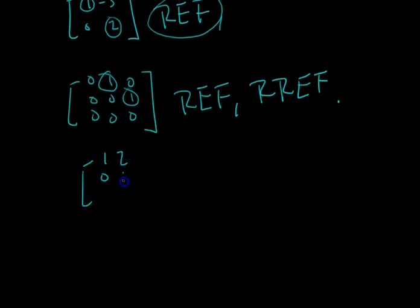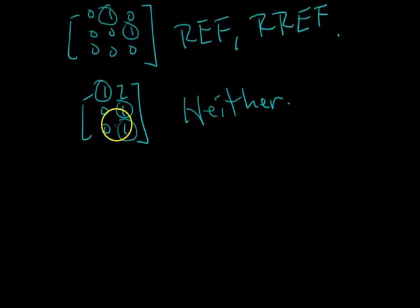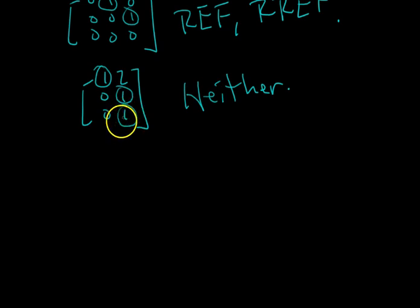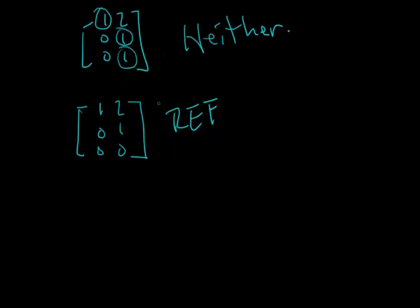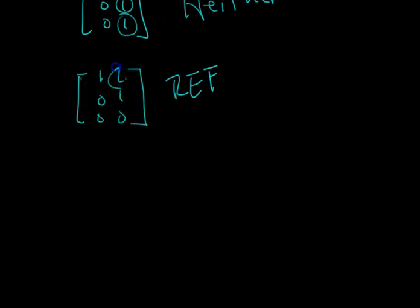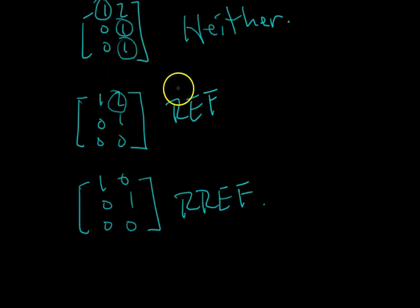The next example: identify your pivots and ask, are there zeros below each one? Right away you see no — this pivot has a one below it. So it's neither REF nor RREF. Now, if you wanted this matrix to be in row echelon form, the only thing holding it back is that one in the bottom. If you got rid of it, the pivots go top-left to bottom-right and the row of all zeros is at the bottom. Then to go from row echelon form to reduced row echelon form, the only thing holding it back is the two. In the next video we'll talk about row operations and how to eliminate those entries.